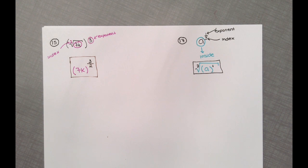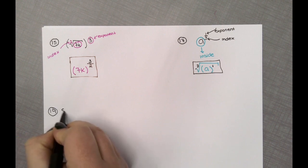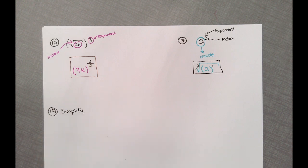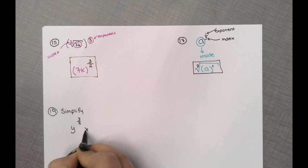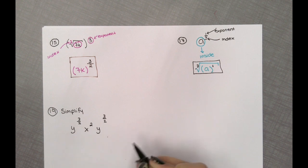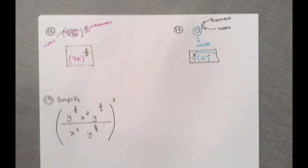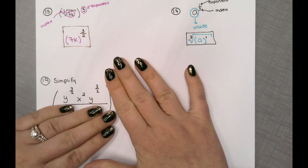The next section is simplifying expressions with rational exponents — I feel this is a difficult section for you. Let's do question number 19. Our question is: y to the three-halves power times x squared times y to the three-halves power, divided by x squared times y to the four-thirds power, all raised to the third power. One of the most common questions I get is: where do I start?